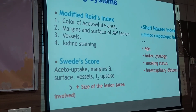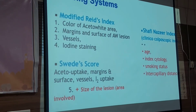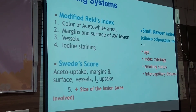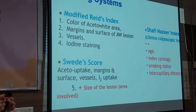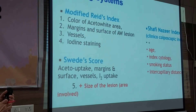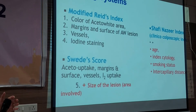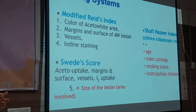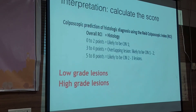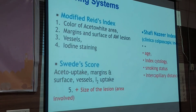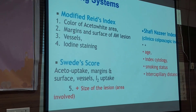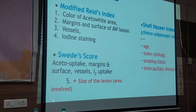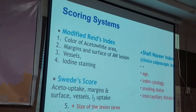Once all steps are complete — focusing, identifying the transformation zone, green filter vascularity, acetic acid application, and Lugol's iodine application — all findings are scored using a scoring system. The oldest and most widely followed system is used, but the Swede score, which uses an additive point-based assessment including lesion size and area involved, is considered a more comprehensive scoring system.